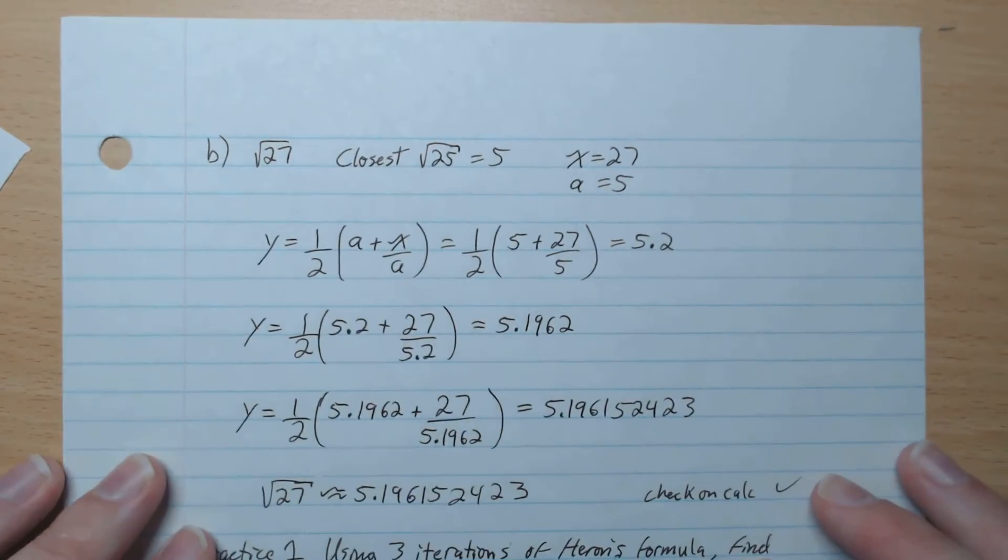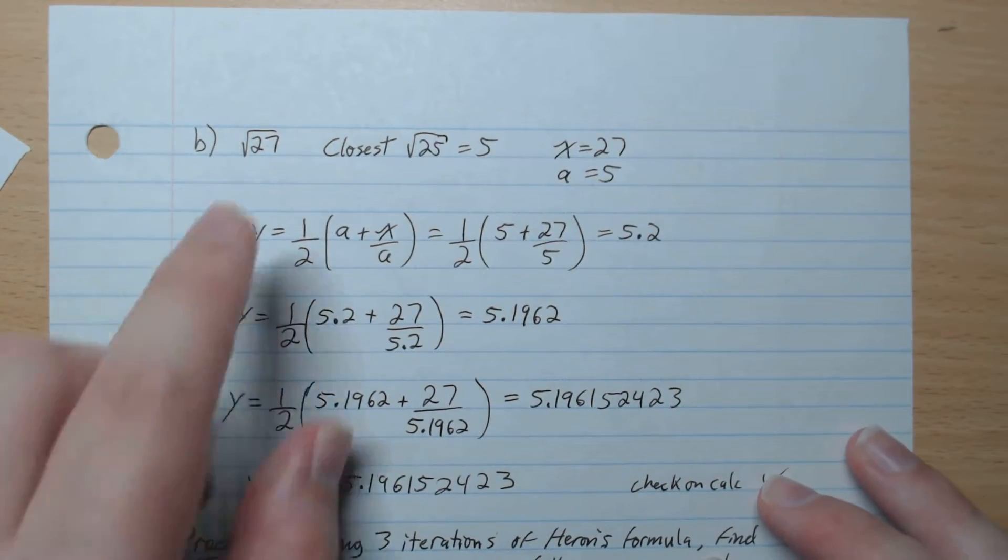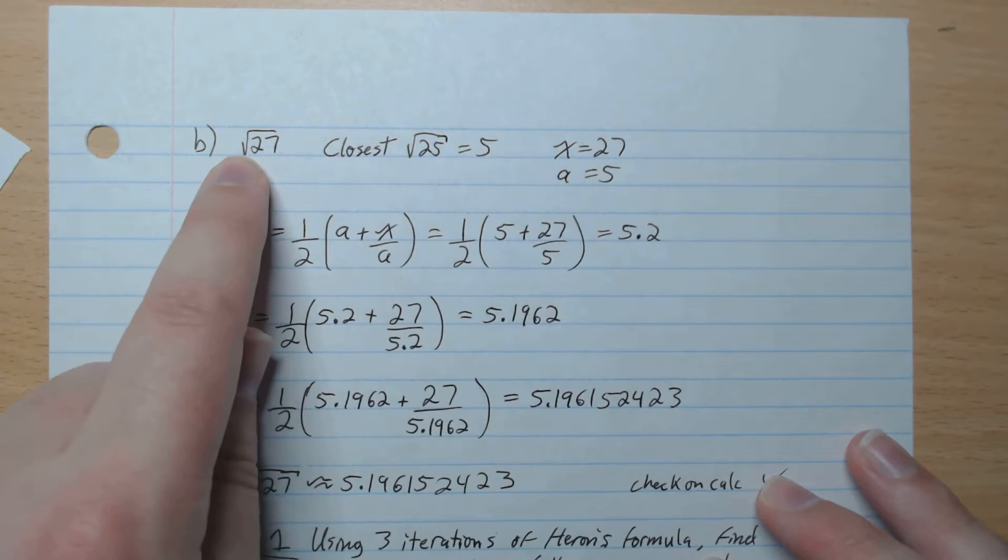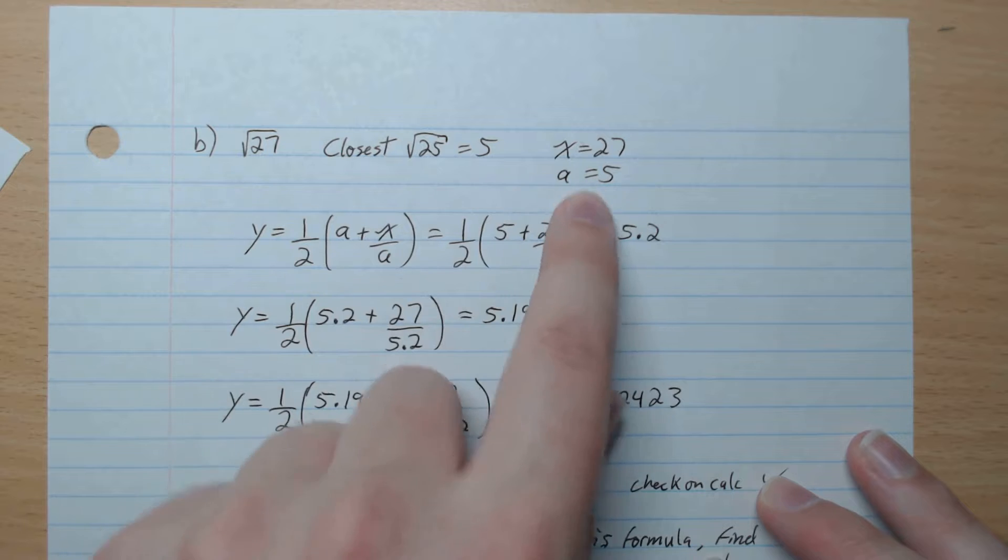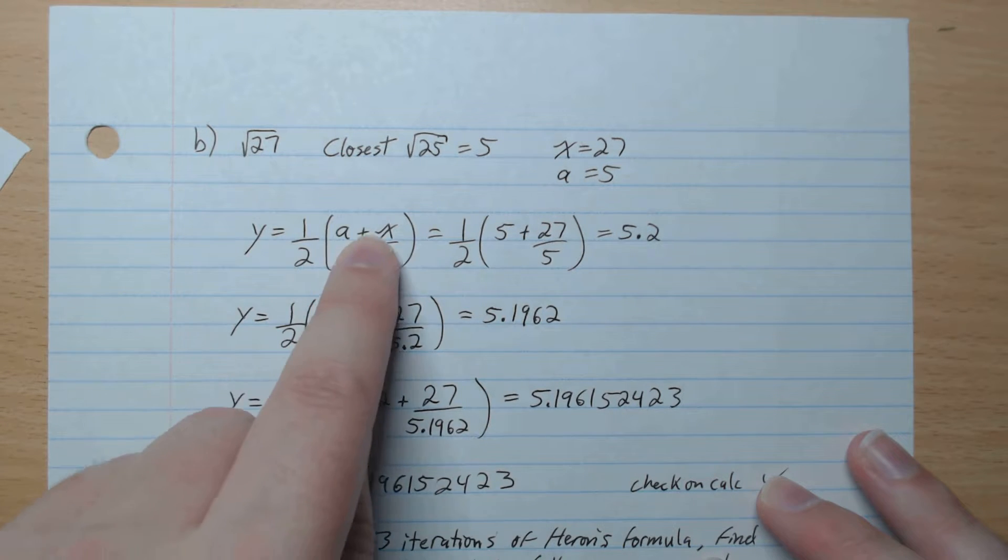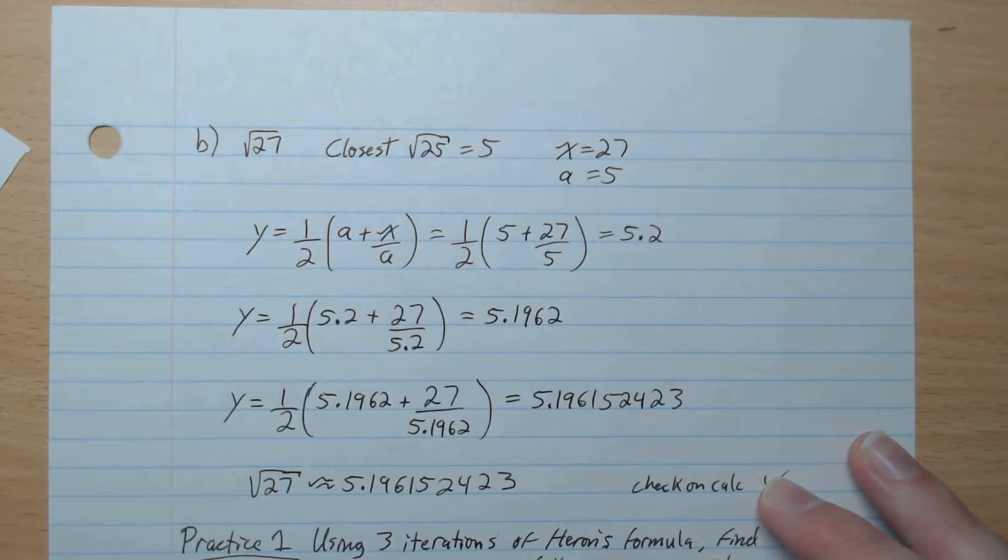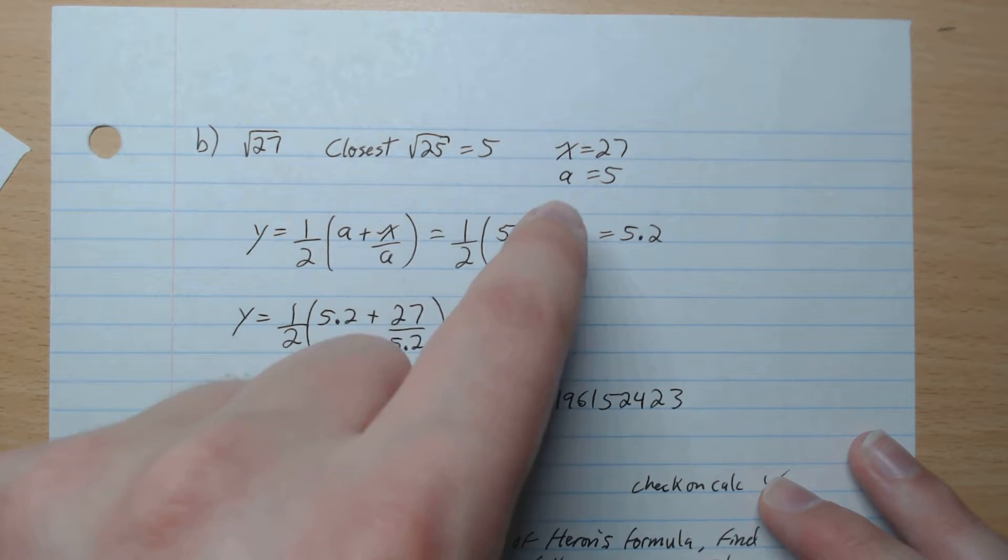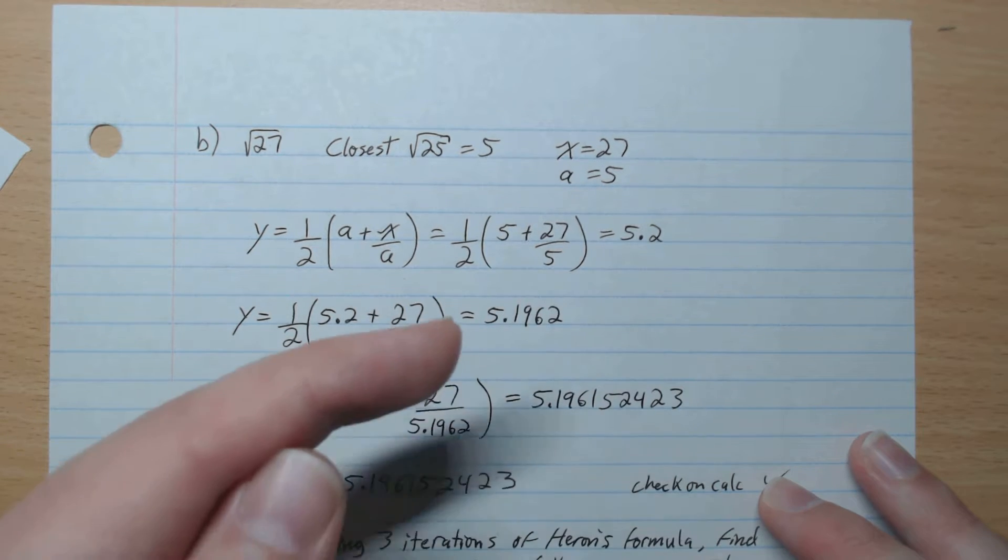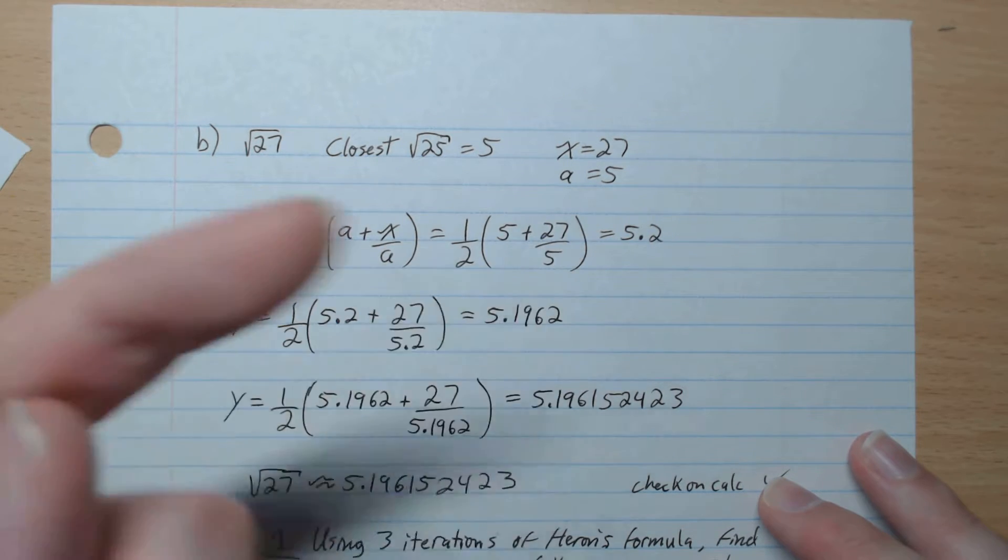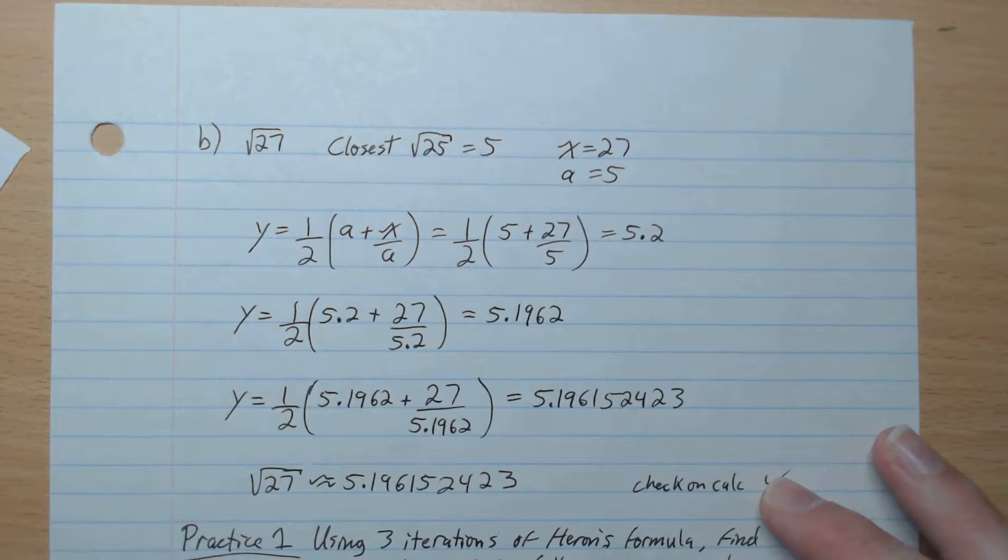Okay, b. Root 27. So the closest is root 25, which gives 5. So x is 27, and a is 5. So y is half a plus x over a. Our a is 5, plug that in. 27 is our x, we get 5.2 on the calculator. Alright, so on the calculator, what am I doing? I'm doing 27 over 5, gives an answer. Then I go plus 5, gives another answer. Then I go divided by 2, which gives this answer. That's how I punch it into my calculator.